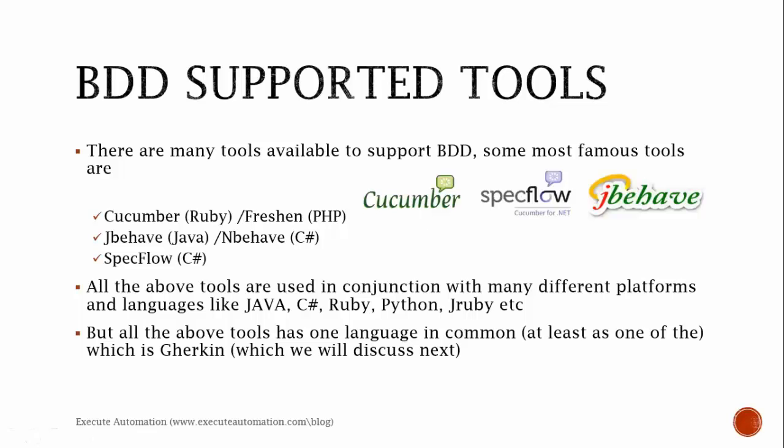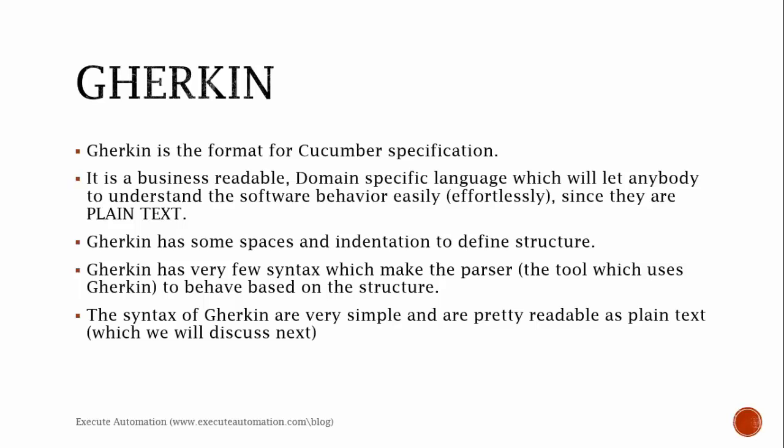Some of the various famous BDD tools are: Cucumber, which is written in Ruby; Trishon, which is written in PHP; jbehave, which is written in Java; Behat, which is written in C#; and SpecFlow, which is what we're going to discuss, also written in C#. All these tools have one language in common, which is Gherkin.